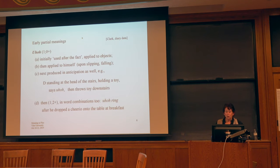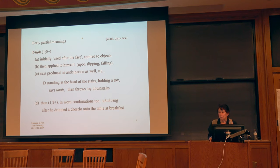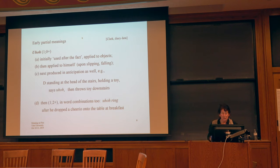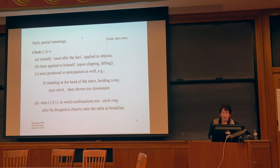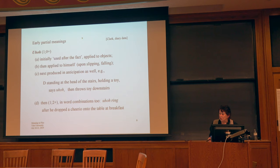Let me give you some examples of early partial meanings that I tracked many years ago. The first is 'uh-oh', which is probably familiar to anyone who's been around a one-year-old. They pick it up very readily and use it with exactly the right intonation — that is, for some disaster that's happened or is about to happen. It's initially used simply after the fact, applied to all sorts of objects in unfortunate circumstances. But this child then extended it to himself when he slipped or fell; he would say, 'uh-oh.' And then he started to produce it in anticipation of unfortunate circumstances — so standing at the head of the stairs, holding a toy, he would say 'uh-oh,' and then throw it down the stairs.